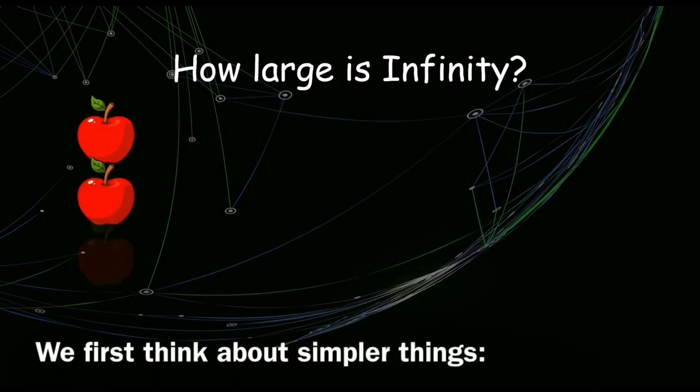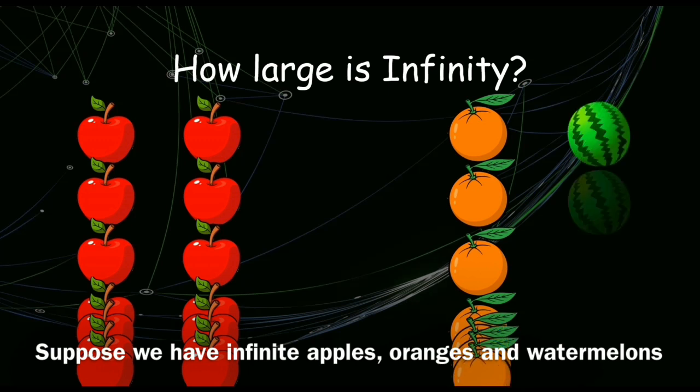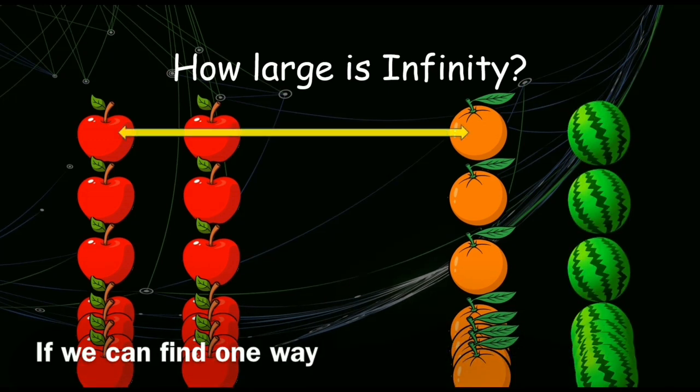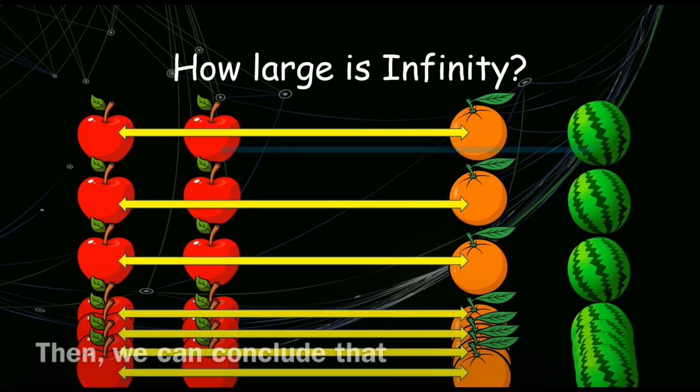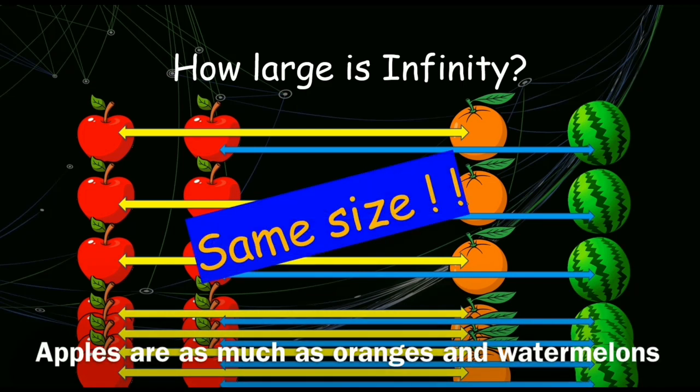We first think about simpler things. Suppose we have infinite apples, oranges, and watermelons. If we can find one way that maps each apple to each orange or watermelon, then we can conclude that apples are as much as the oranges and watermelons.